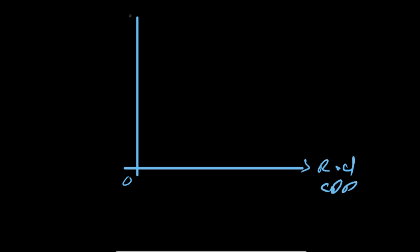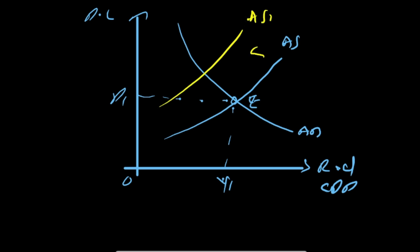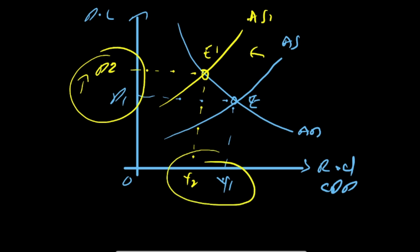Cost-push inflation is caused by rising cost of production that lowers aggregate supply. Again, real GDP is on the x-axis and price level on the y-axis. At equilibrium E, price level is P1 and real GDP is Y1. Due to a decrease in aggregate supply from higher production costs, the AS curve shifts left; equilibrium moves to E1, price level rises to P2, and real GDP falls to Y2. Both shortened and longer AS curves are accepted by the examiner.